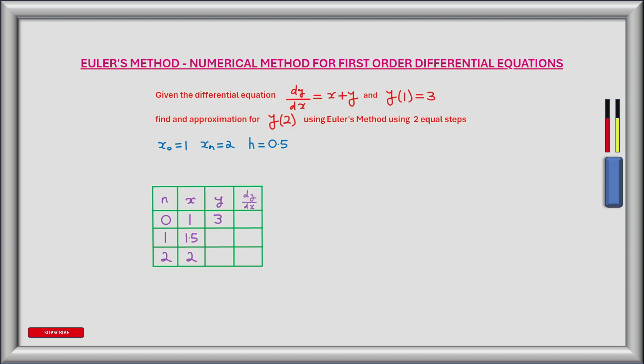I've created a grid here so that we can iterate through to our solution, and the column headers are n, x, y, and dy/dx. So n is the number of steps, so we start at 0 and we're using two steps.